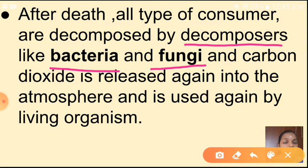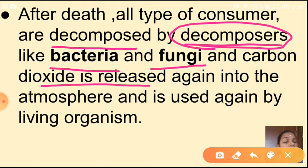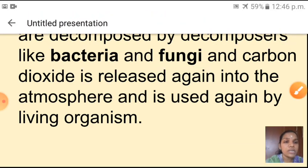Finally it reaches the apex consumers. After death, all types of consumers are decomposed by decomposers. The complex material is converted into simple substances that mix with the soil. Plants absorb nutrients from the soil, and carbon dioxide is released into the atmosphere. Plants again absorb this carbon dioxide during photosynthesis — completing the cycle.